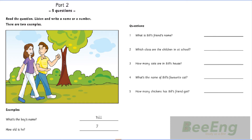5. Has Kim got a cat? No. She's got chickens. Chickens? How many? She's got fifteen. Fifteen? Yes. They're in the garden.